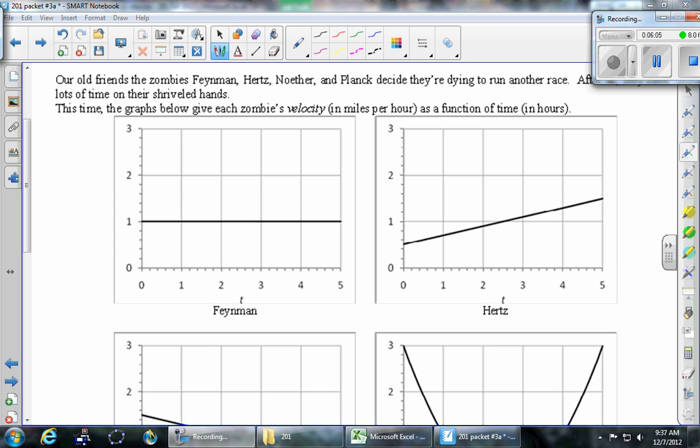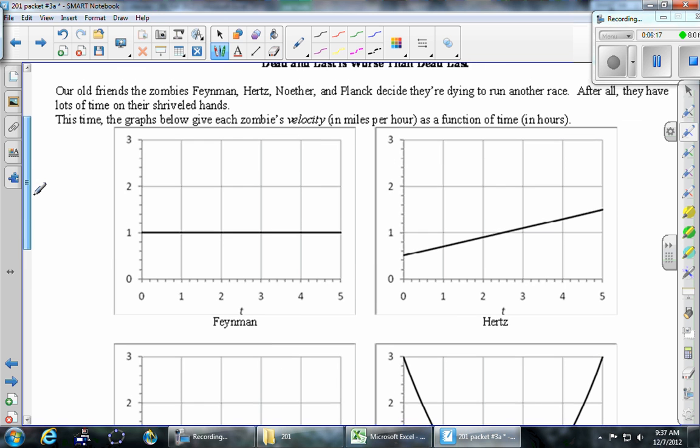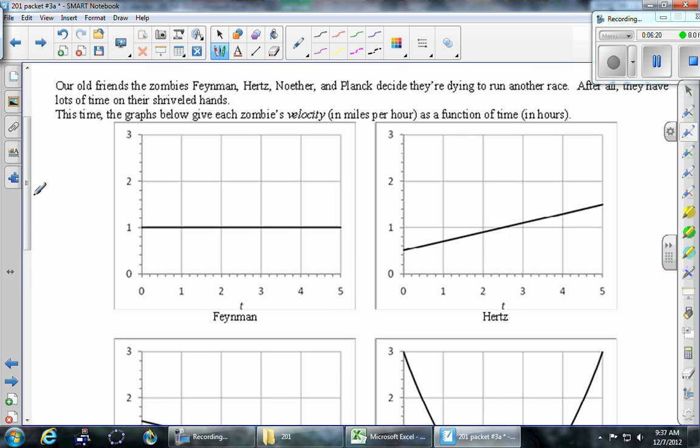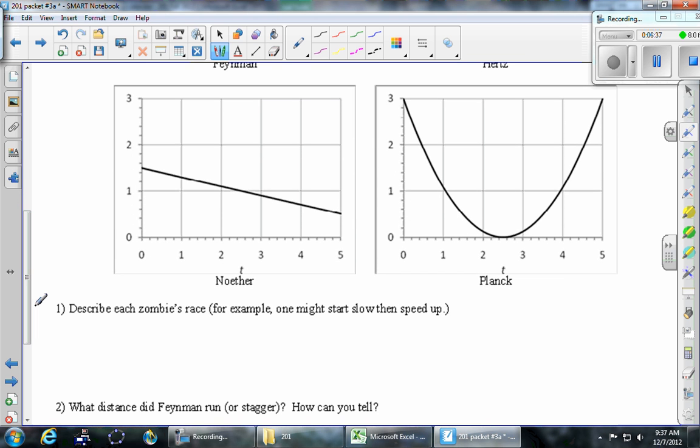Okay, so I think we made some real good progress on this group activity and finished in various places, but there are a few conclusions that I really want to make sure that we get at the end of today. So the first thing is, why was it easy to figure out the total distance traveled for Feynman? Because it was a constant velocity, and so we get to use our favorite, most basic physics formula as distance is rate times time, and that's fine as long as the rate is constant.